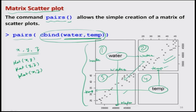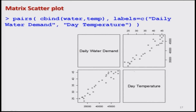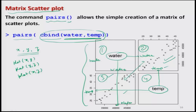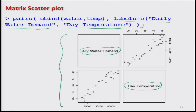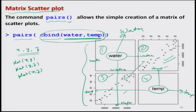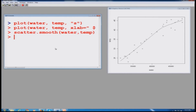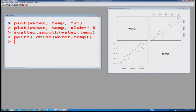To change the labels in the matrix plot, we can modify the `pairs` function using the `labels` option: `pairs(cbind(water, temp), labels=c('Daily Water Demand', 'Day Temperature'))`. This gives the same matrix scatter plot but with the labels changed to the desired titles. Let us experiment with this on the R console to confirm the outcome.